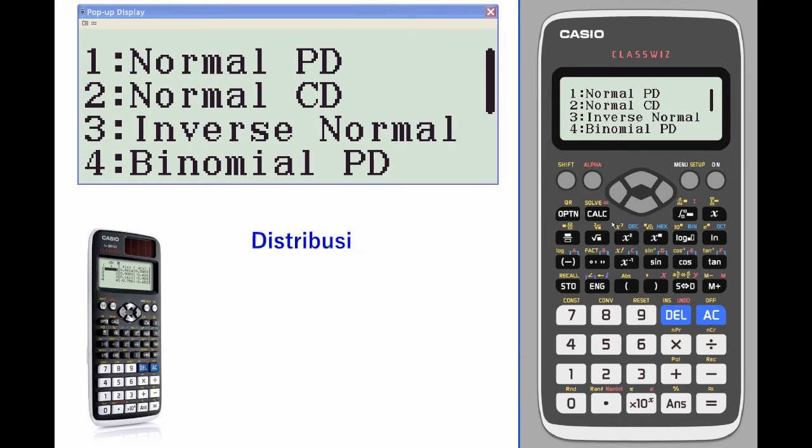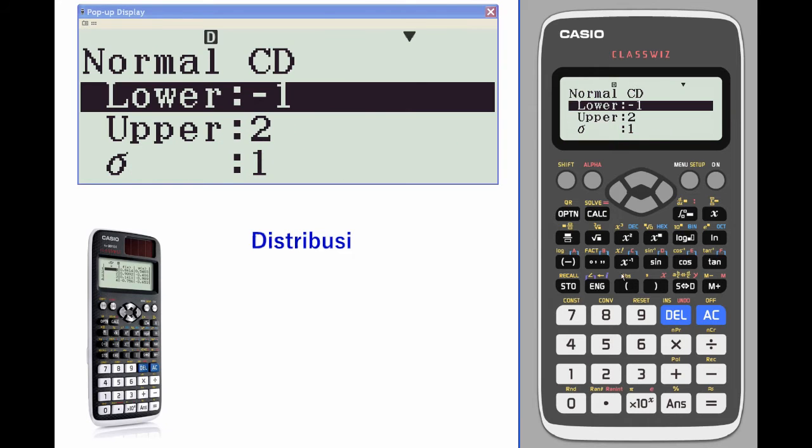Let's go back and do a normal calculation, normal cumulative density. We're going to look for the area between two values, lower value of negative one, upper value of two.